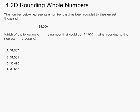And on this problem it says, the number below represents a number that has been rounded to the nearest thousand. And it's 34,000. Which of the following is a number that could be 34,000 when rounded to the nearest thousand?